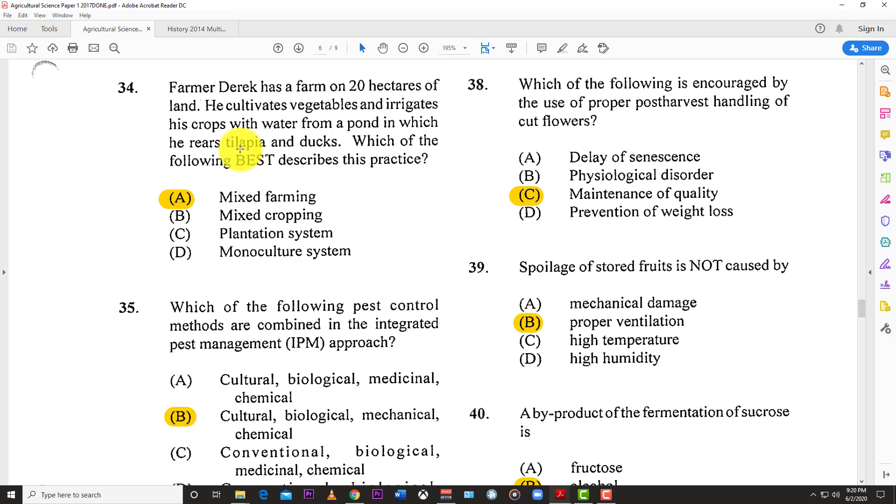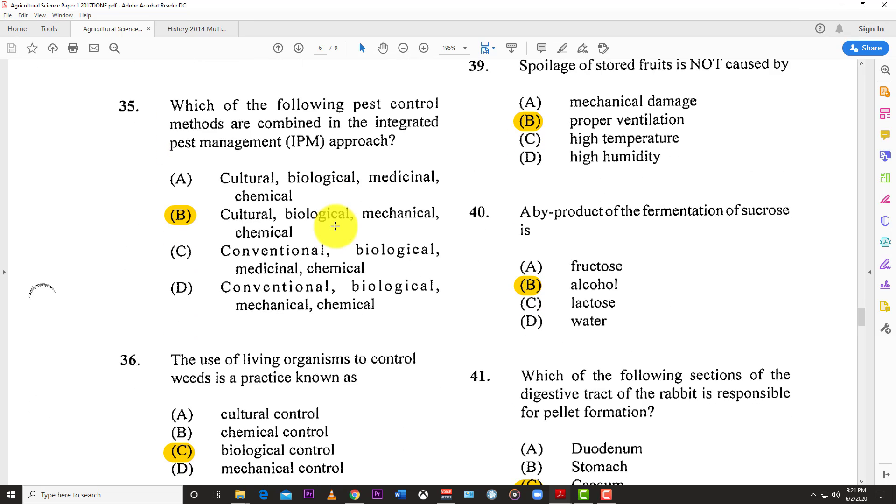Number thirty-four: Farmer Derek has a farm of 20 hectares of land. He cultivates vegetables and irrigates his crops with water from a pond in which he raised tilapia and ducks. Which practice best describes this? The answer is A, mixed farming.